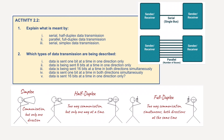Serial transmission uses a single wire, a single connector from the sender to the receiver. It is quite slow, but involves transmitting data one bit at a time in a single stream. Many people often use this method of transmission for long-distance transmission.